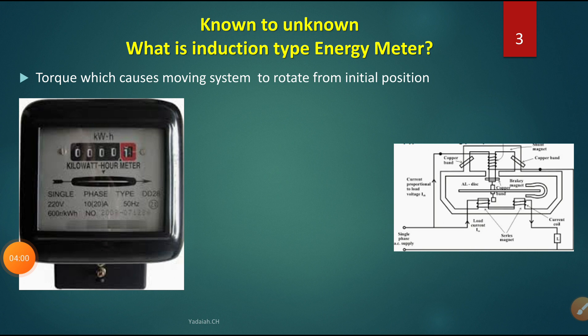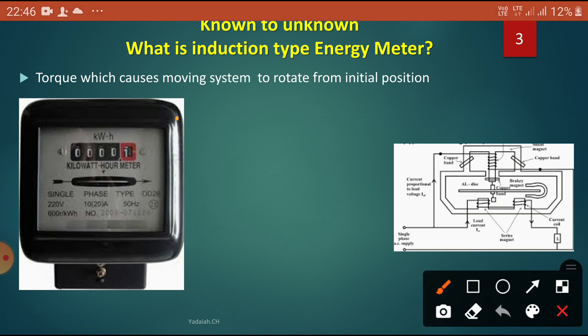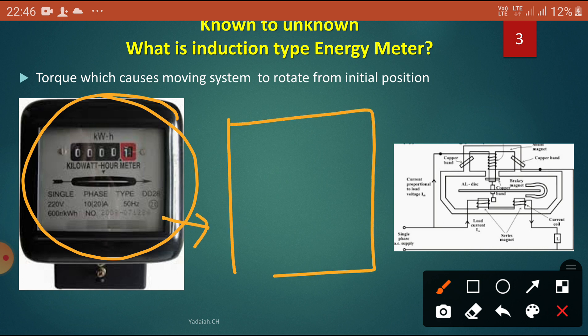Now you can observe how the torque causes the moving system to rotate from its initial position. This is the energy meter we have seen. Inside, it has the four systems. If we open this cover, we are going to see what parts are inside the energy meter.